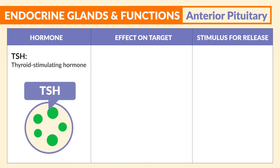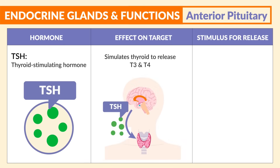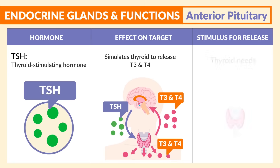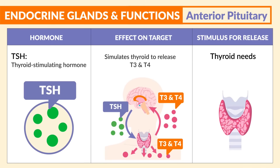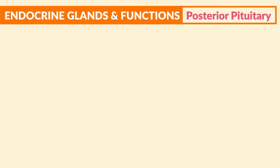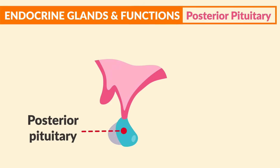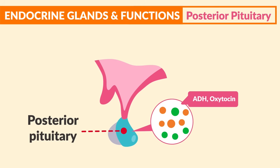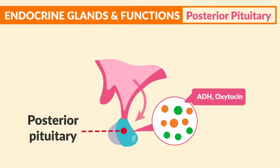Next is TSH, the thyroid-stimulating hormone. It stimulates the thyroid to release T3 and T4 for thyroid needs. Now moving on to the posterior pituitary — the posterior pituitary does not necessarily produce hormones directly, but rather stores and secretes hormones produced by the hypothalamus, which is what it's connected to.